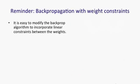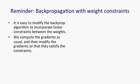Now, backprop is good at learning when there are weight constraints. We saw this for convolutional nets, and just to remind you, we can actually incorporate any linear constraint quite easily in backprop. So we compute the gradients as usual, as if the weights were not constrained, and then we modify the gradients so that we maintain the constraints.